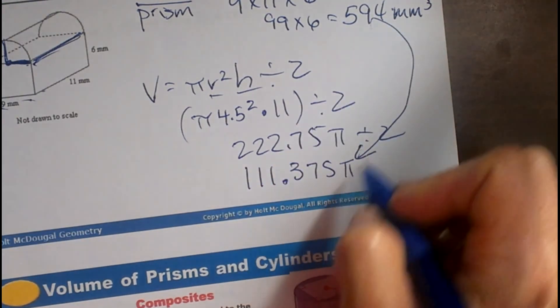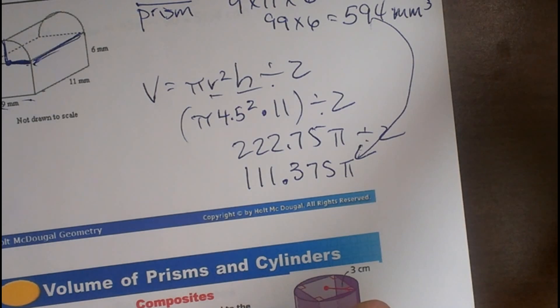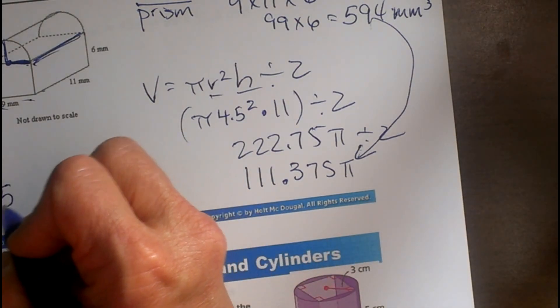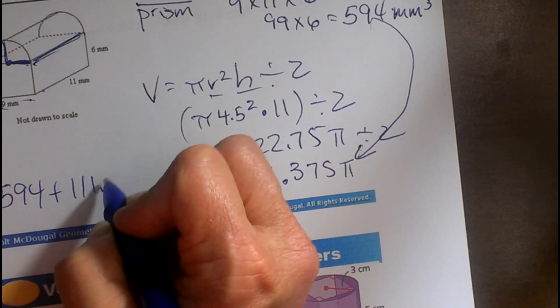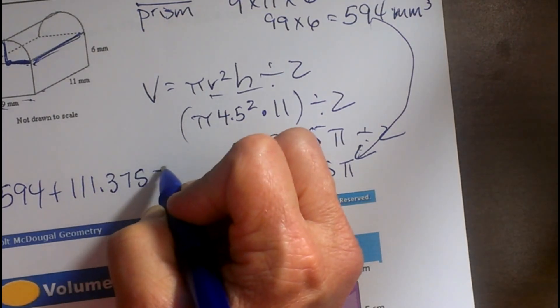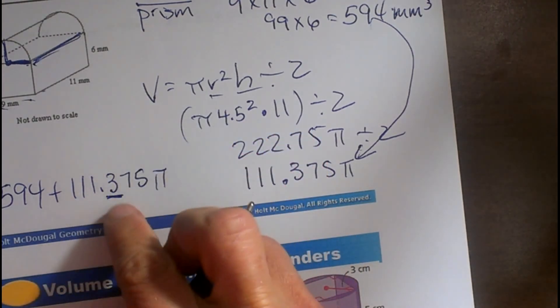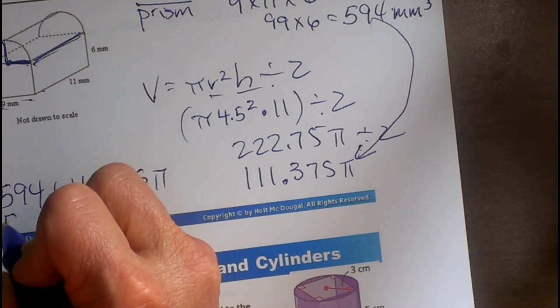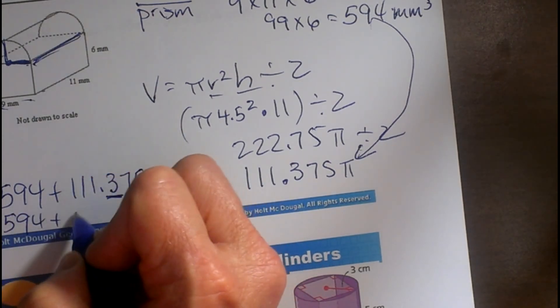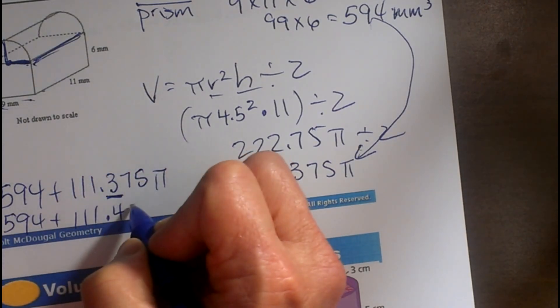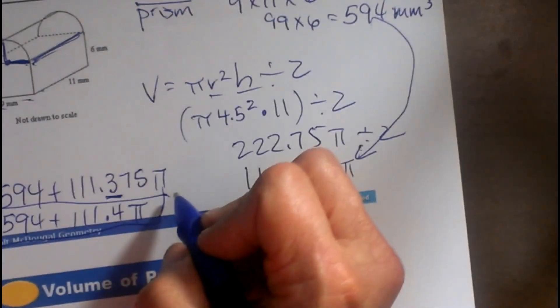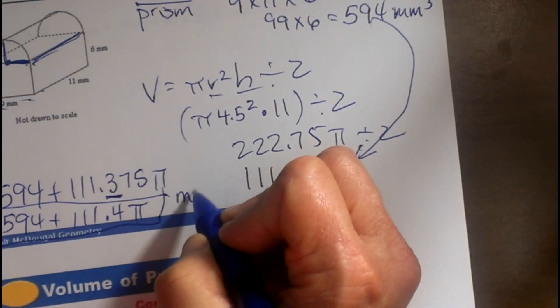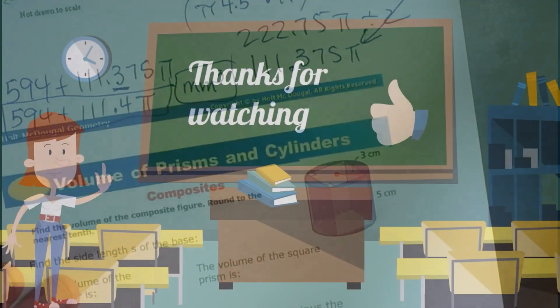Now we've got to take these two and do what? Add them together. So I've got 594 plus 111.375 pi. Now we usually round to tenths, so I'm going to round that 3 to a 4. So 594 plus 111.4 pi. And because that has a pi, I can't add them together. I just stick my units with it, which is millimeters cubed. And there we go.